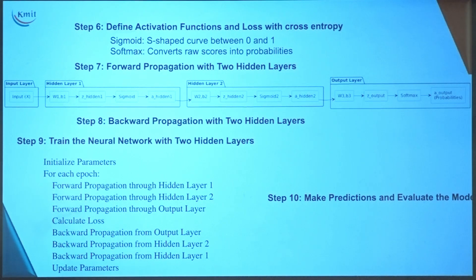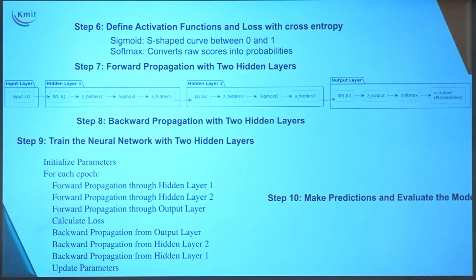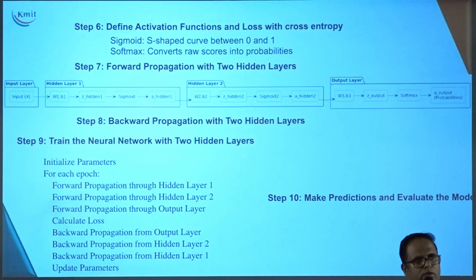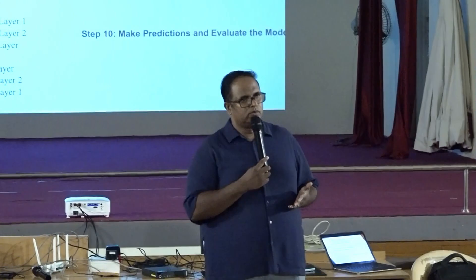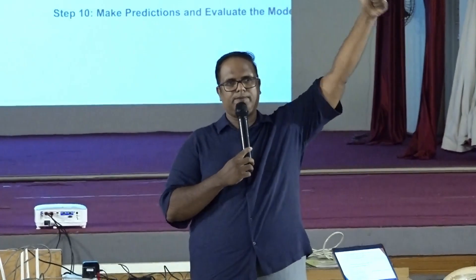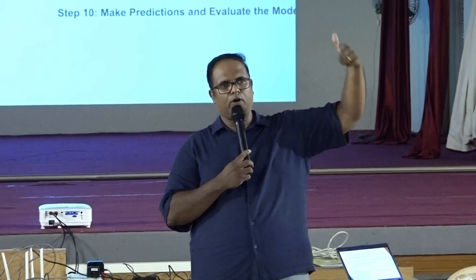We are going to make predictions and evaluate the model. I want accuracy of at least 25 to 30 percent since we are using only two epochs. Now I'm handing over — she will talk about the activity. Step 6, and she will repeat step 5 if you have not initialized the parameters.